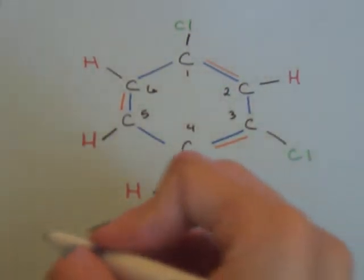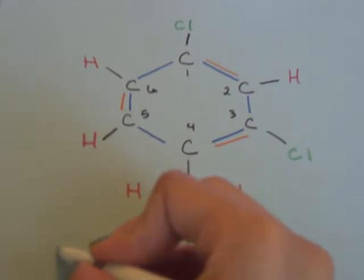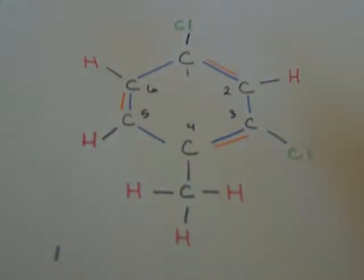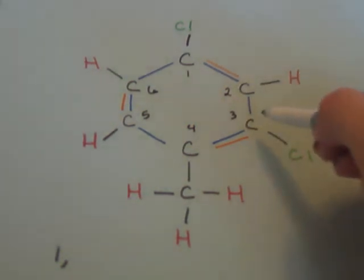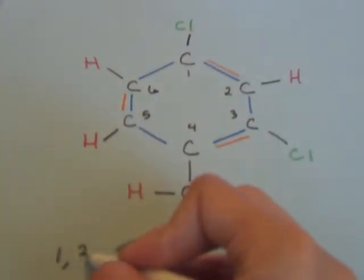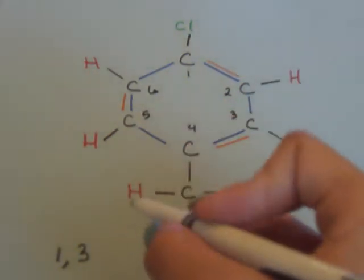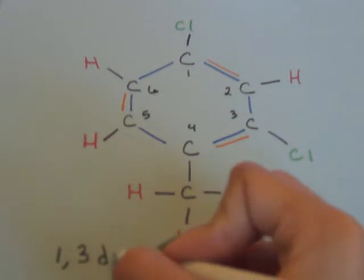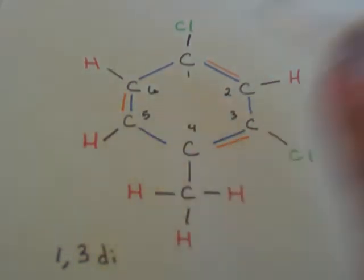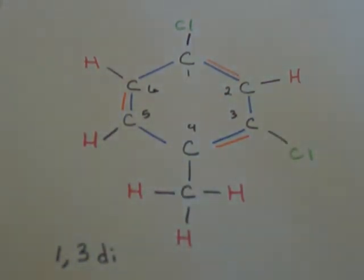We would go ahead and start naming it by putting a 1, and then putting a comma, because we're going to name the place of the carbon on which the other halogen is present. So that would be 3. And then, like I mentioned earlier, we would put di because it's 2. The prefix di means 2. So we're going to go ahead and put dichloro, because it's chlorine, the halogen.